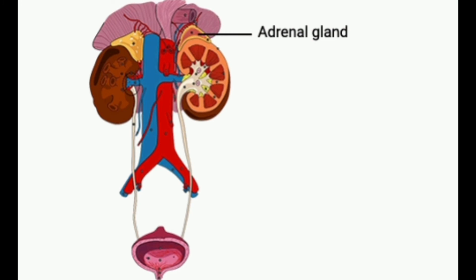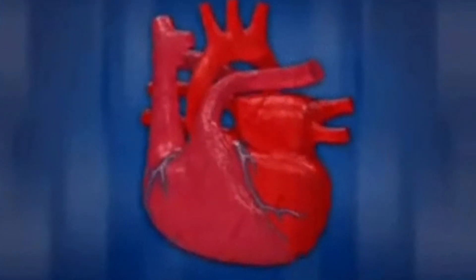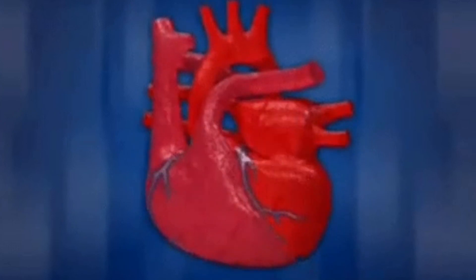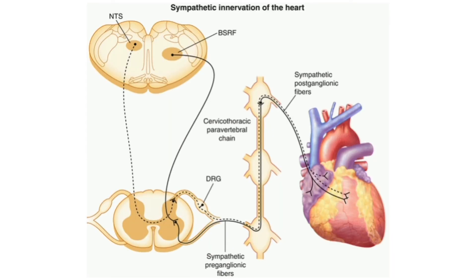For hormonal regulation, adrenaline and noradrenaline are hormones secreted by the medulla of the adrenal gland and play a significant role in regulating heartbeat and increasing cardiac output. Noradrenaline accelerates the heartbeat, while adrenaline performs this function particularly at times of emergency.